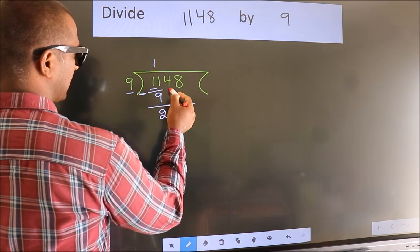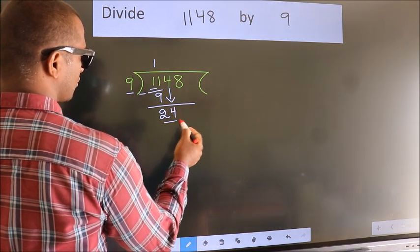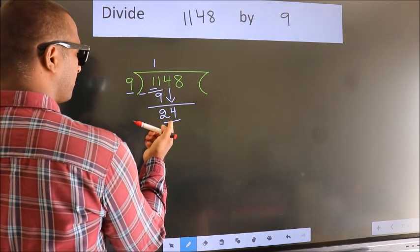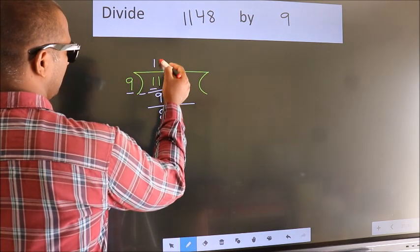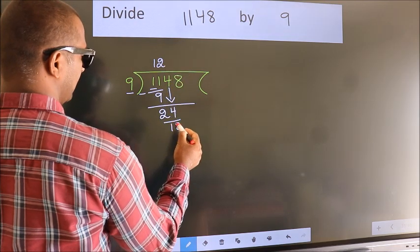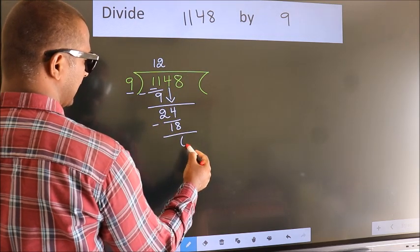After this, bring down the beside number, so 4 down, making 24. A number close to 24 in the 9 table is 9 twos 18. Now, we subtract. We get 6.